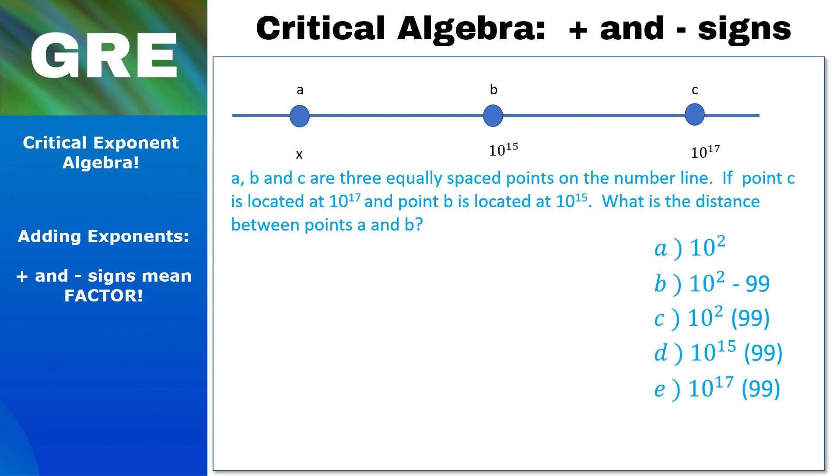Okay, we're being asked to find the distance between points A and B. Well, we're told the points are equally spaced, so the distance between A and B will be exactly the same as the distance between B and C. And that's good news for us. So all we have to do is subtract 10¹⁷ minus 10¹⁵ to find the distance.